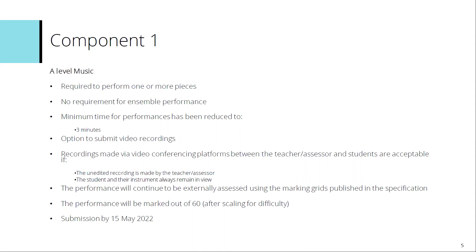For A-level music, that would continue to be externally assessed using the marking grids published in the specification, and the performance would continue to be marked out of 60 after scaling for the difficulty. Again, submission would be by the 15th of May.